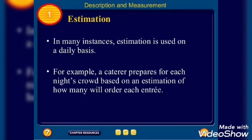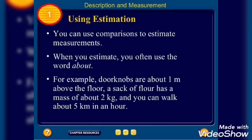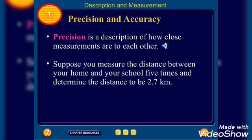Like, I think he is better than him, he is shorter than him, he is brighter than him, he is fairer than him. These things, they can go with estimation. You can use comparisons to estimate measurements. When you estimate, you often use the word about. For example, door knobs are about 1 meter above the floor. A sack of flour has a mass of about 2 kg. And I think I can walk up to 5 km. So such estimations can go when we are dealing with not very serious things, which are not very important for measurement.